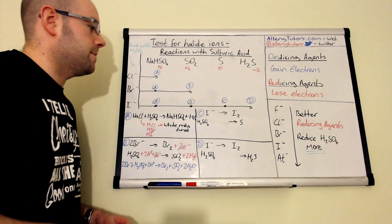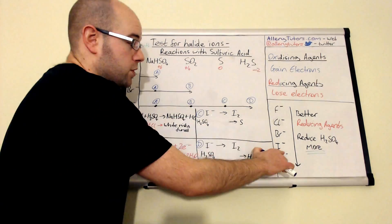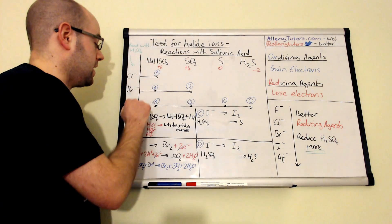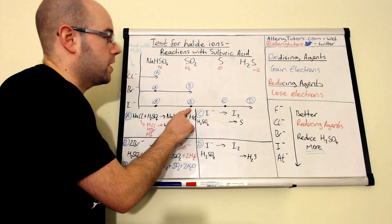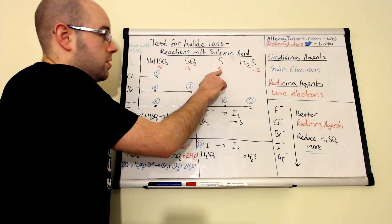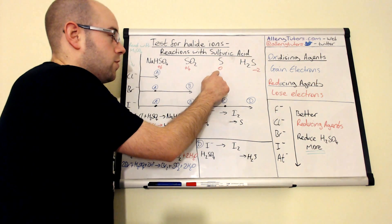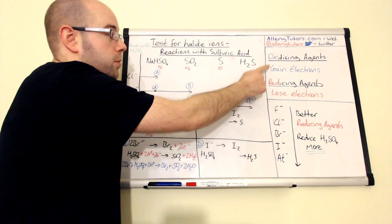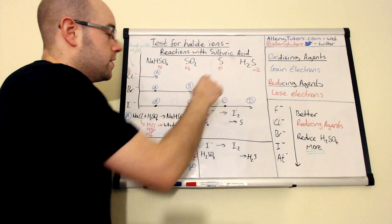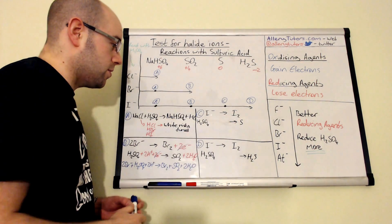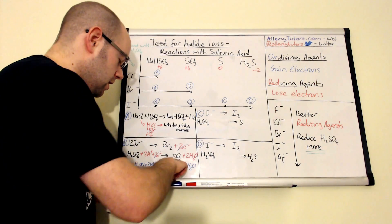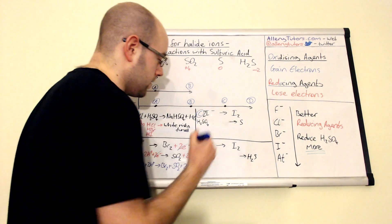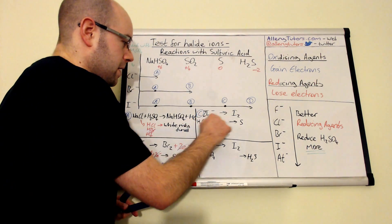Iodine is a much more powerful reducing agent. It will not only reduce sulfuric acid to SO₂, but also further to sulfur, which has an oxidation state of zero, and also to H₂S. Starting with reaction C — sulfuric acid being reduced to sulfur: the iodide oxidation half-equation is 2I⁻ → I₂ plus 2e⁻. For the reduction half-equation, H₂SO₄ → S.